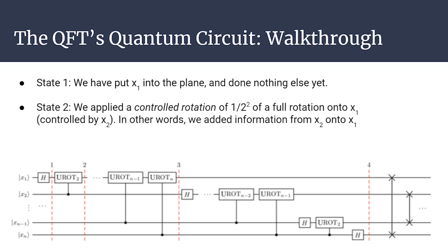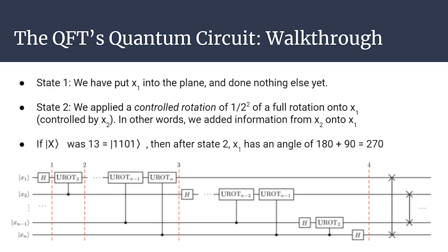At step 1, we apply the Hadamard gate to qubit x1 and put it on the plane. At step 2, we apply U-rot 2 (one-fourth of a full rotation) to x1, controlled by x2 — adding information from x2 onto x1. This only happens for the component of x2 where the state is 1, not where it's 0. If our number x is 13, after step 2 we have an angle of 180° from the first Hadamard gate plus 90° from U-rot 2, because x2 is 1, so we do apply the unitary rotation.